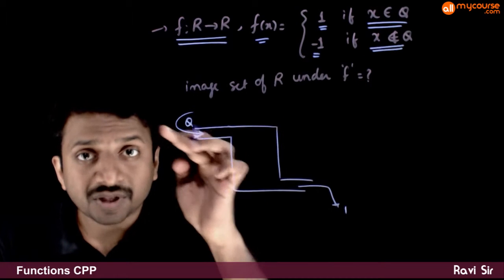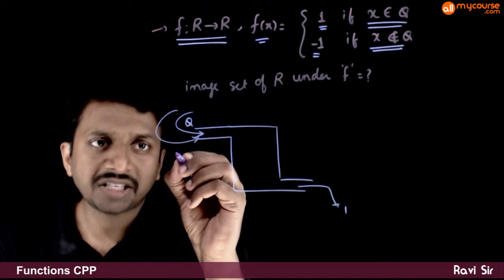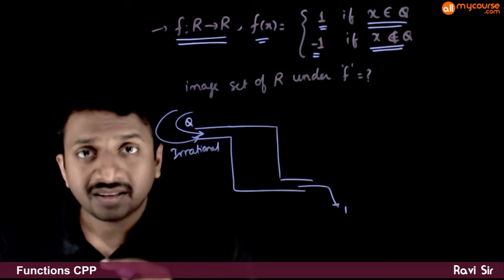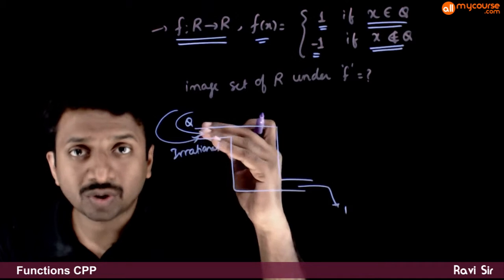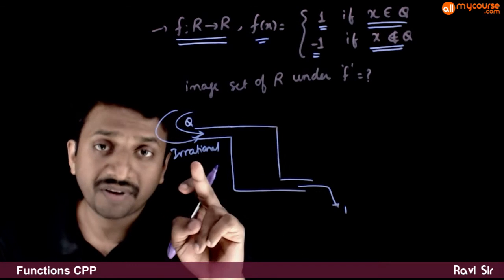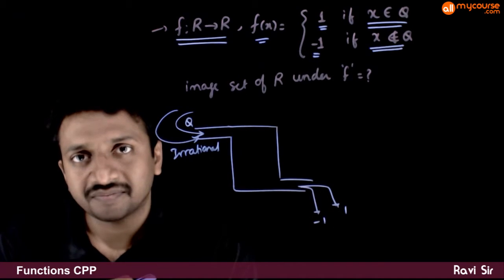If the number which goes in is not a rational number, that is, if an irrational number goes in. So, we know that real numbers are divided into two sets, rational numbers and irrational numbers. So, if an irrational number goes in, you get minus 1 as the answer.